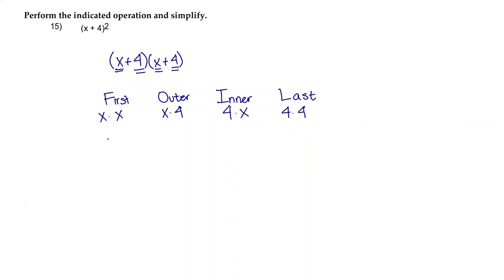So x times x is x², x times 4 is 4x, 4 times x is 4x, and 4 times 4 is 16.